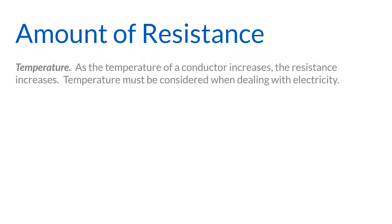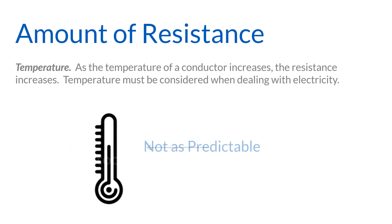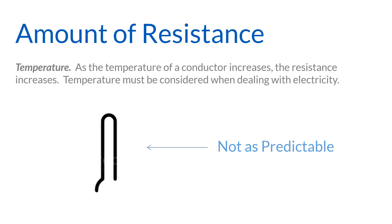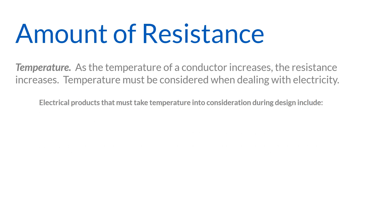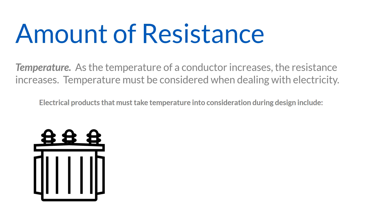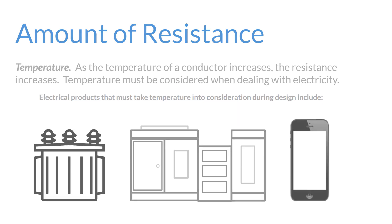Temperature: As the temperature of a conductor increases, the resistance increases. Temperature is not as predictable as the other factors, but it must be considered when dealing with electricity. Electrical products that must take temperature into consideration during design include transformers and their temperature rise, and motor drives and other enclosed products and electronics.